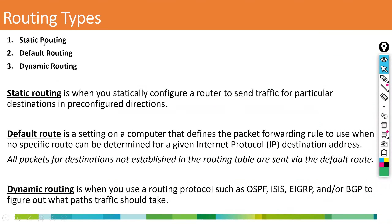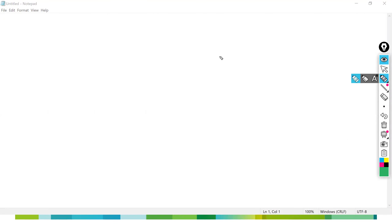There are three types of routing: static routing, default routing, and dynamic routing. Static and default are essentially the same — only the configuration is different. Static routing means adding the destination information manually to the routing table. Let me give you a topology example.